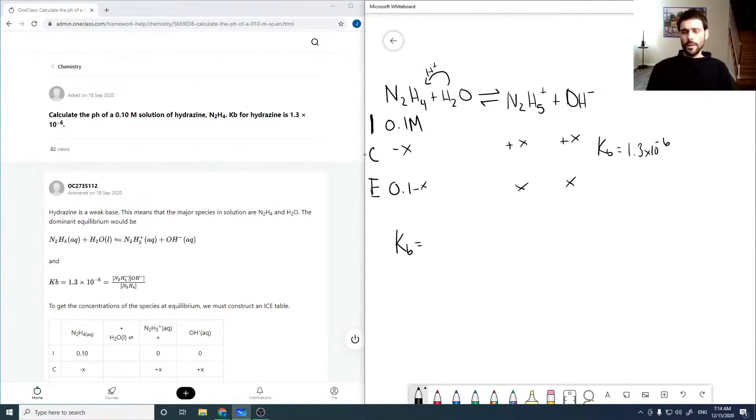So our Kb is going to be our concentrations of products over our concentration of reactants. Which, inputting our equilibrium values here, is going to be x times x over 0.1 minus x.